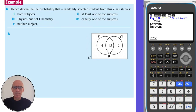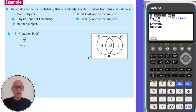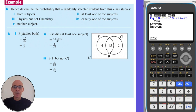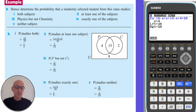Now we calculate the probabilities. The probability a randomly selected student studies both subjects is 15 out of 30. For at least one subject, there are 4 + 15 + 2 = 21 students, so the probability is 21/30 or 7/10. Physics but not chemistry is 4 out of 30. Exactly one subject is 6 out of 30, equal to 1/5. And studying neither subject is 9 out of 30, equal to 3/10.